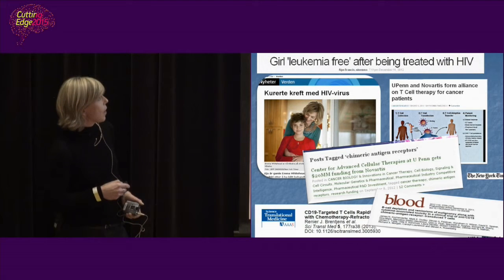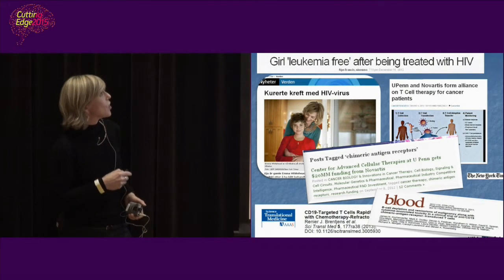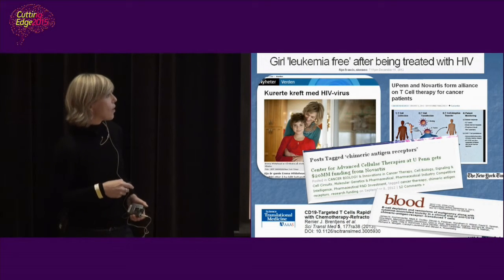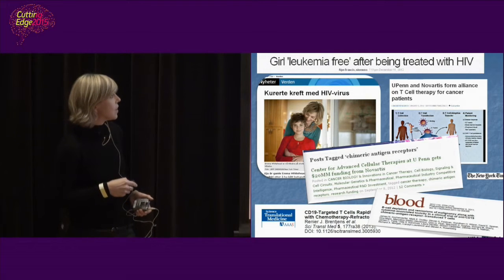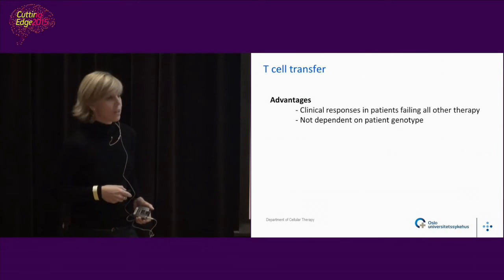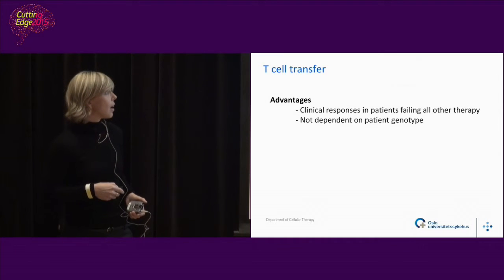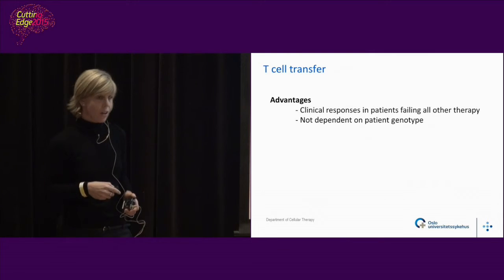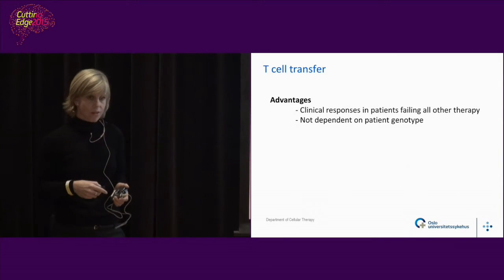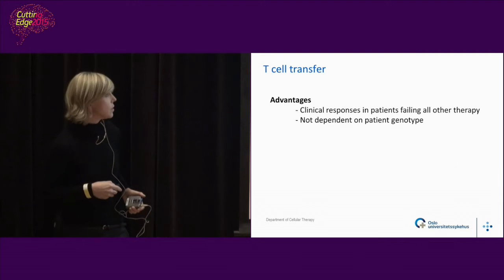There are sometimes headlines saying you're using HIV to treat patients, but this is not the case. Some part of the virus is used to insert the new molecule into the cells. We have seen amazing cures in children who had otherwise incurable cancer. The advantage of this therapy is that you see clinical responses in patients who have failed all other types of therapy. It's not dependent on the patient's genotype — in principle, if you put in the right targeting molecule, you can target any type of cancer.